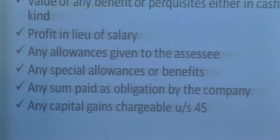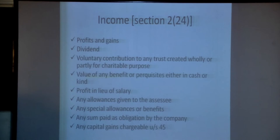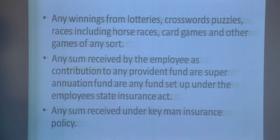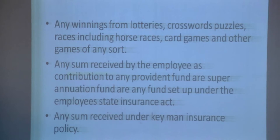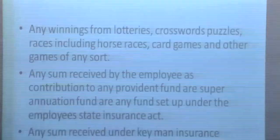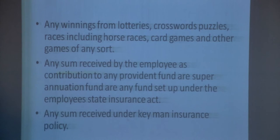Income also includes: any capital gain chargeable under Section 54; any winnings from lotteries, races, or similar games; any sum received by the employees as contribution to any provident fund, superannuation fund, or any fund set up under the Employee State Insurance Act; and any sum received under a keyman insurance policy. These are the items of income under Section 2 sub-section 24 as per the Income Tax Act 1961.